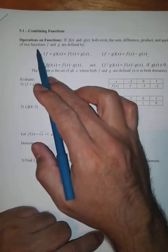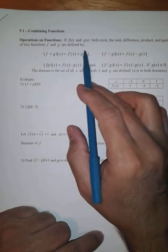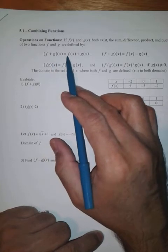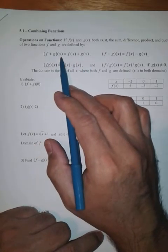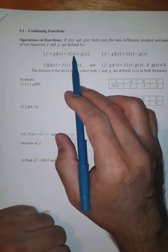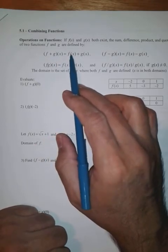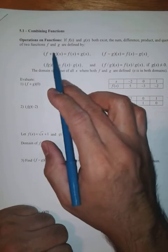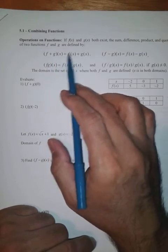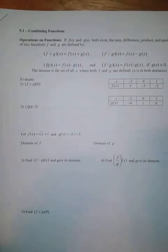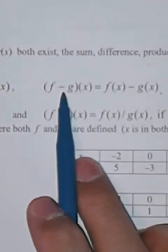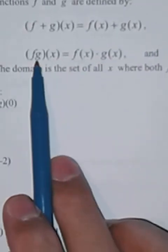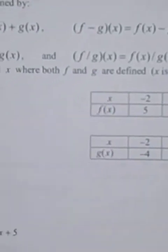The sum, difference, product, and quotient of two functions f and g are defined by: f plus g of x is f of x plus g of x. That means when they ask us to find f plus g of any number x, we separate them into f of x plus g of x. Do not think of distributive property. This is not the distributive property. This is the definition of adding, subtracting, multiplying, and dividing functions.